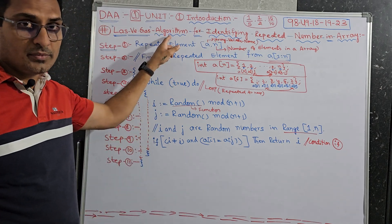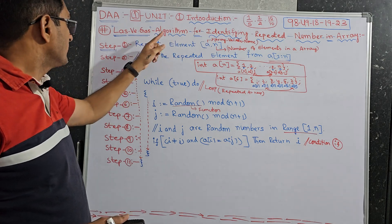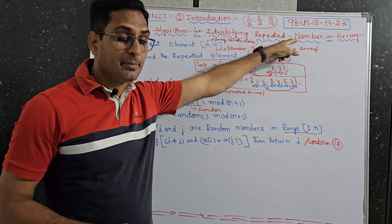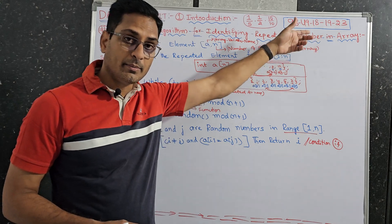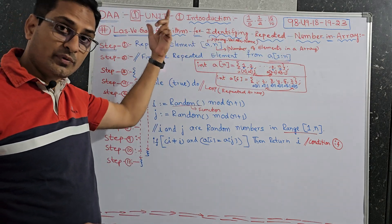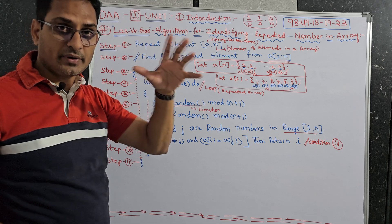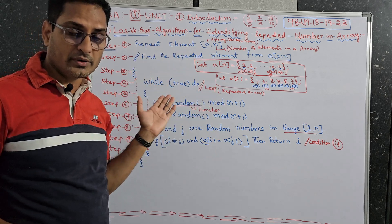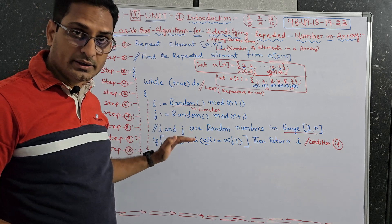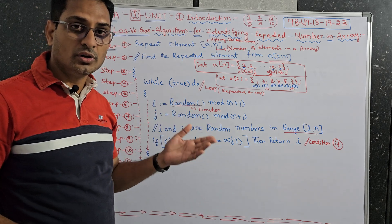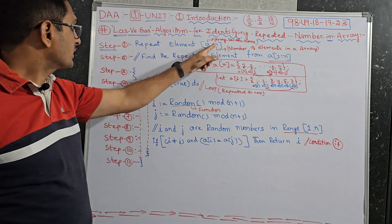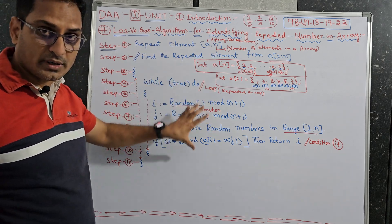This is Las Vegas Algorithm. My topic is Las Vegas Algorithm for identifying a repeated number in an array — repeated number in an array with Las Vegas Algorithm. Before writing this, the randomized definition theory from the previous video is also important. Write this algorithm and its description to get good and full marks. This red marker explanation is for this algorithm.